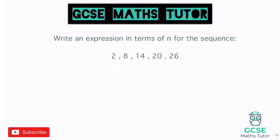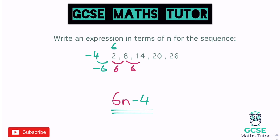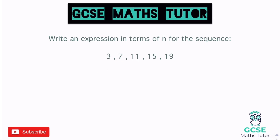Next: write an expression in terms of n for this sequence. It goes up in 6s, so it's related to the six times table — that's 6n. Using the trick, we go back 6: take away 6 from 2 and get negative 4. So it's 6n minus 4. Logically, the first number in the six times table is 6, and to get from 6 to 2 you subtract 4 — so it's four smaller than the six times table: 6n − 4.